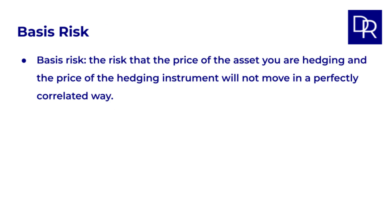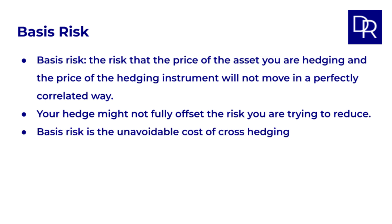Basis risk, in the context of hedging, is the risk that the price of the asset you are hedging and the price of the hedging instrument will not move in a perfectly correlated way. This imperfect correlation means that your hedge might not fully offset the risk you are trying to reduce. This is particularly important in cross hedging, where you intentionally use a hedging instrument that is different from the underlying asset. Basis risk is the unavoidable cost of cross hedging. Our goal then becomes, how do we minimize this basis risk?